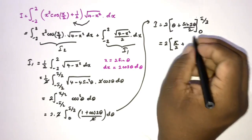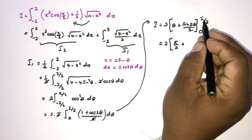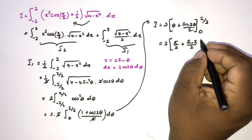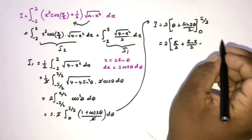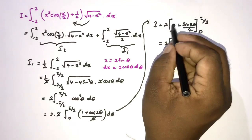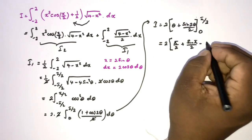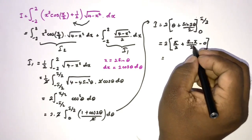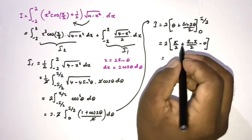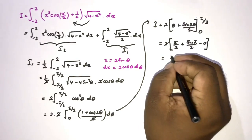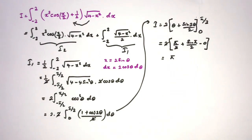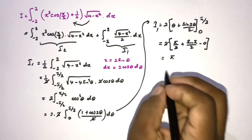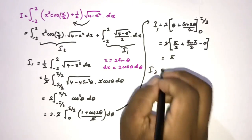Sine of 2 times pi over 2 is sine of pi, which equals 0. Applying the lower limit, theta equals 0 and sine of 0 equals 0. So we have 2 times pi over 2, the 2s cancel, and I2 equals pi.